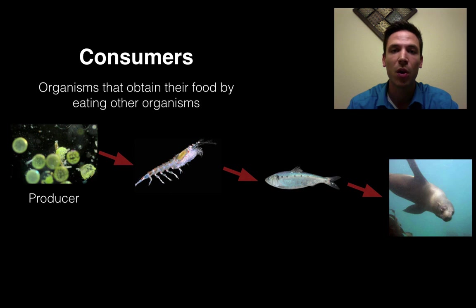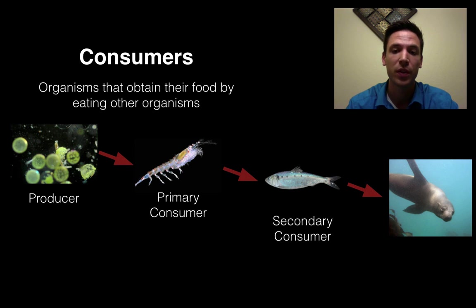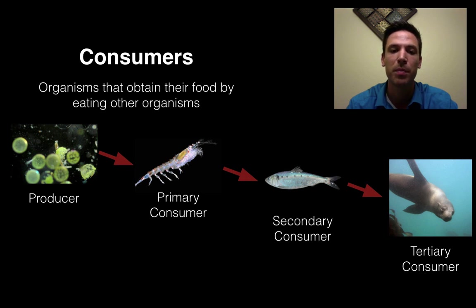Our krill, fish, and seal are all types of consumers, but we give them different names to differentiate between them. Our krill is called a primary consumer — primary meaning first. Primary consumers are the ones that eat producers; they're the first consumer in a food chain. Our fish is called a secondary consumer — secondary consumers eat the primary consumer. Then a tertiary consumer, meaning third, eats the secondary consumer. We give them different names based on where they fall in the food chain.